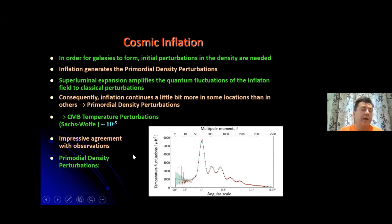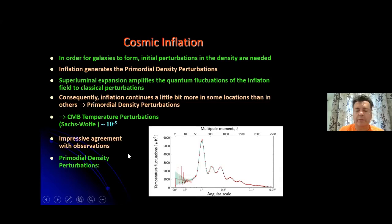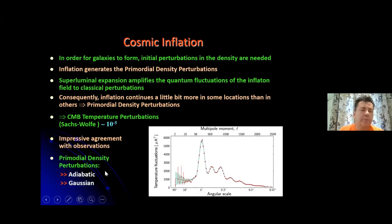Observations suggest three main characteristics for the primordial density perturbations. First, they are predominantly adiabatic, meaning they are the product of a single degree of freedom — the inflaton field. They are also predominantly Gaussian, which reflects the randomness of the original quantum fluctuations. And finally, they are almost scale invariant.